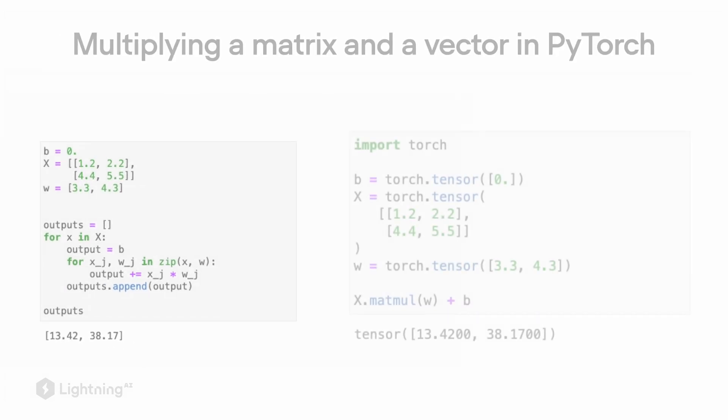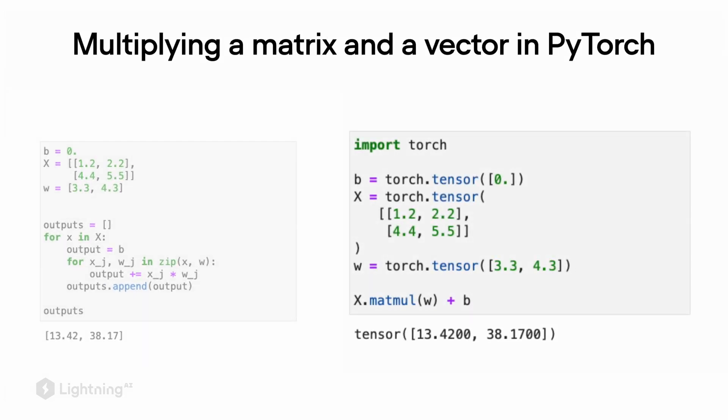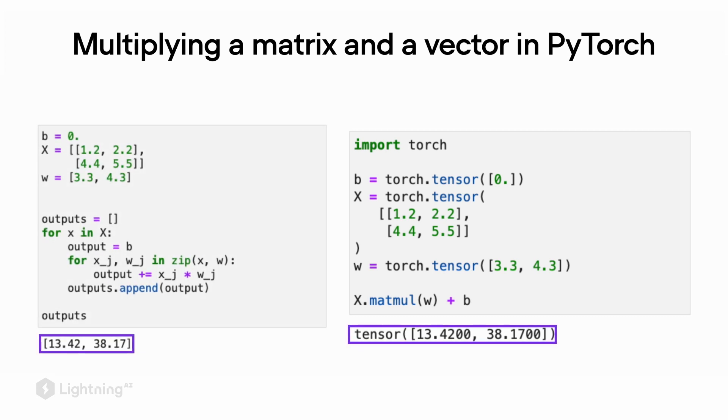After converting the list of lists from Python into a Torch tensor format, namely a matrix, we can then use the matmul method to compute the matrix multiplication between W and X. And as we can see, the result is exactly the same, except of course, the Python version outputs a list and our PyTorch implementation outputs a tensor.